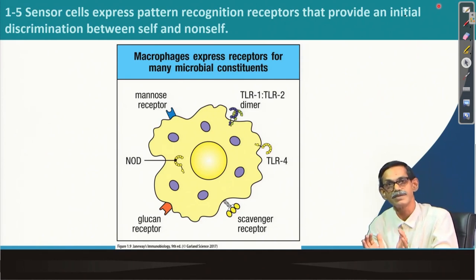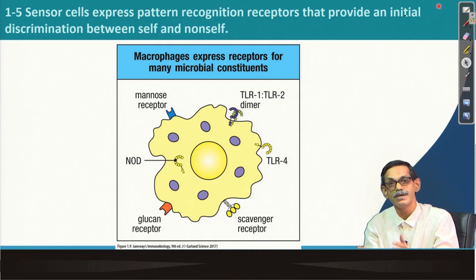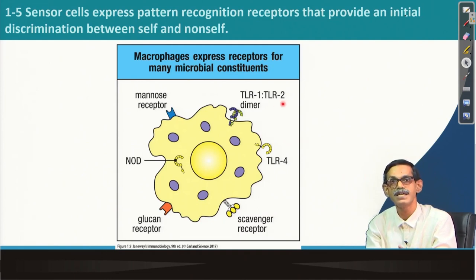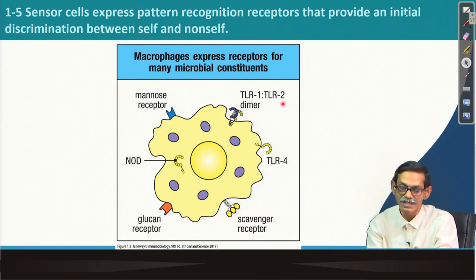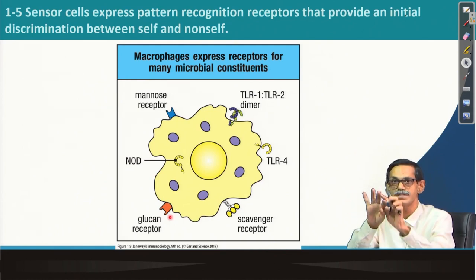Information from outside to inside of the cell is transmitted through receptors. Most cells in our body have different kinds of receptors depending on their functions. But immune cells like macrophages and dendritic cells also have a special kind of receptor to recognize which organisms are pathogenic or foreign. These are mostly TLR1, TLR2 — TLR stands for toll-like receptor — TLR4, glucan receptors, and mannose receptors, all exposed on the outside of the cell.